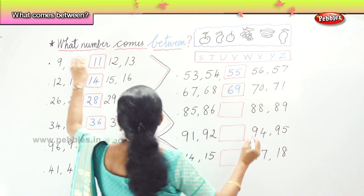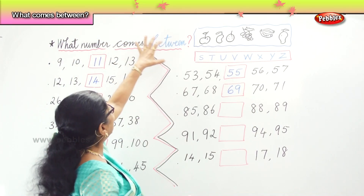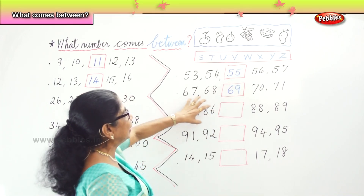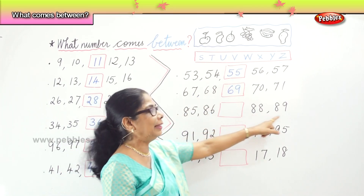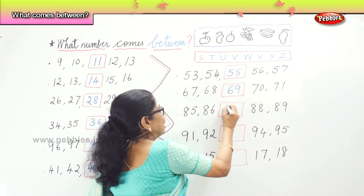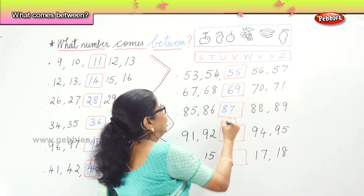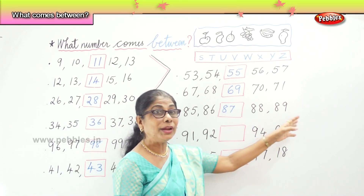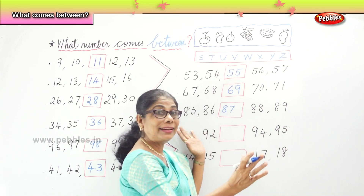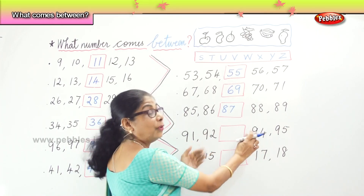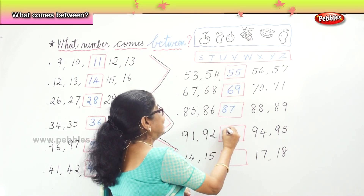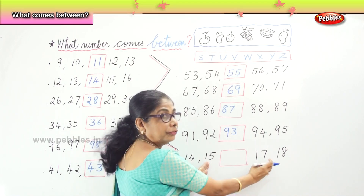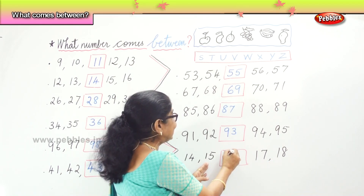We learnt to write what number comes between. Next: 85, 86, __, 88, 89 — answer is 87. Very good. Number between: 91, 92, __, 94, 95 — answer is 93. Very good. Then: 15, __, 17 — answer is 16.